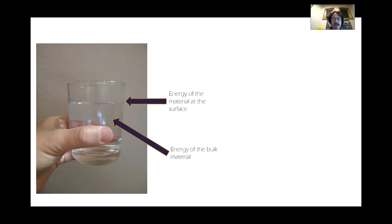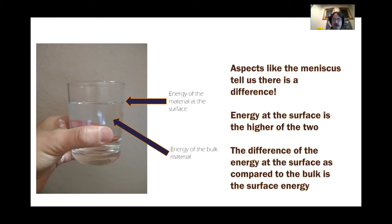Surface energy is all around us. Looking at this glass of water, you can see differences between the material in the bulk part of the water and the top of the water. There's a difference in the energy associated with the material in the bulk compared to the energy of the surface — you can actually visibly see it. The meniscus is one example. The surface energy is basically the difference of the energy at the surface compared to the energy of the bulk, and the energy of the surface is generally higher.